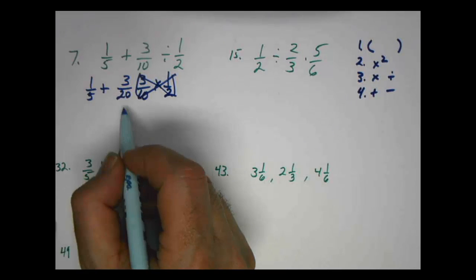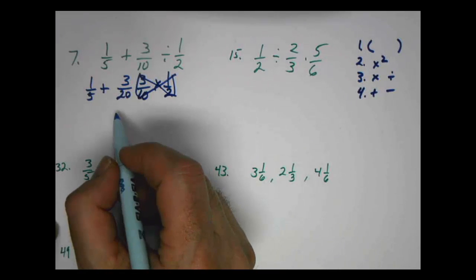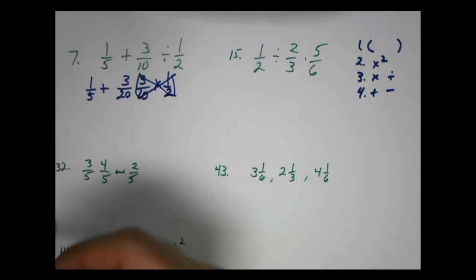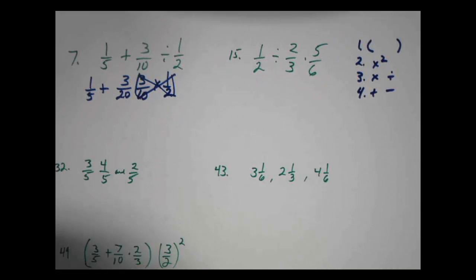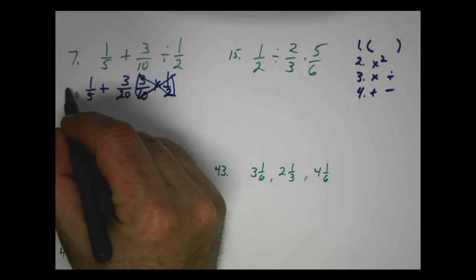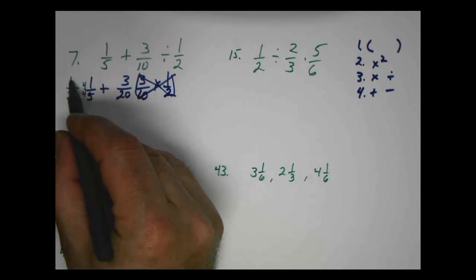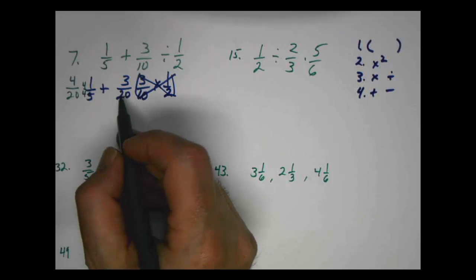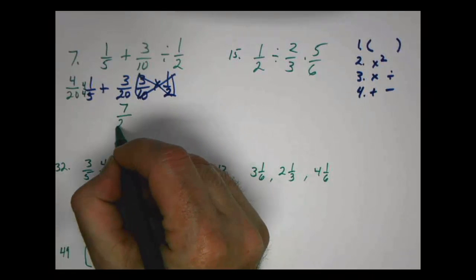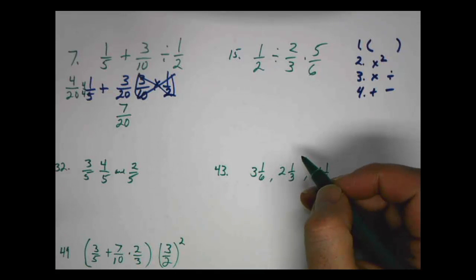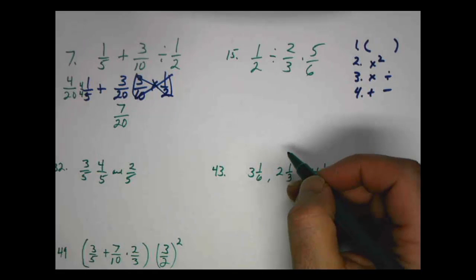Now we need common denominators. We have fifths and twentieths, so we need to make them both twentieths. We'll do that by multiplying by four fours. Now I have four twentieths plus three twentieths gives me a total of seven twentieths. So there's a number of steps in these. You just have to go kind of slow and easy and you'll be fine.